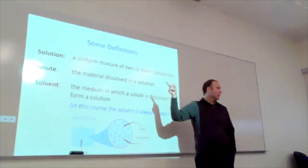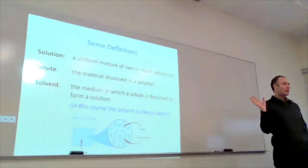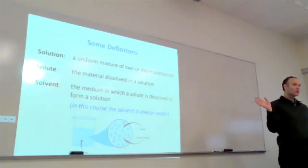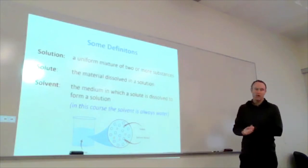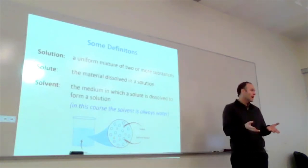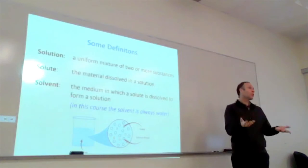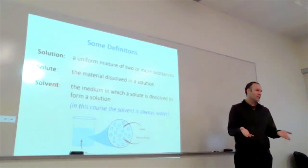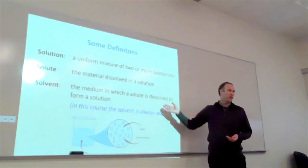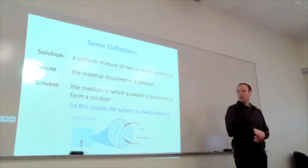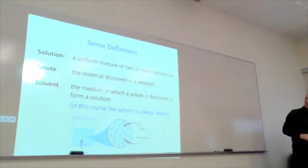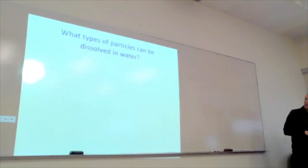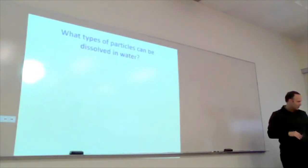So some definitions, hopefully you know these ones. Solution is a mixture of two things. It doesn't have to be liquid, by the way. Brass is a solution of metals. It has copper and I'm not sure what else in it. That's a solid solution. But usually when we think of solutions, we're usually thinking of liquids. And probably usually we're thinking about something dissolved in water. And in this class, it will always be water, and that will be the solvent. The thing of which the solutes are dissolved in. So just a reminder, I didn't want to confuse those words. That's what they are often. So what types of particles are dissolved in water? There's a big list here.